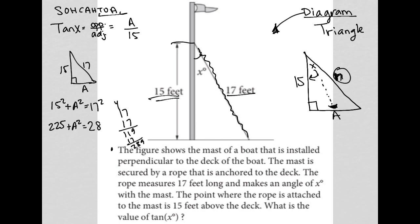And now I can subtract 225 from both sides. And I'm left with A squared equals 64. I can then square root both sides and A is equal to 8. So this is 8. This is 8. This is 8, which means my adjacent side is actually 8. So tangent of X is equal to 8 over 15.